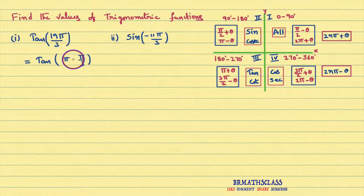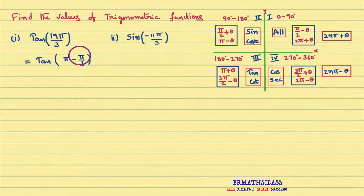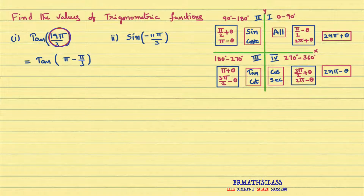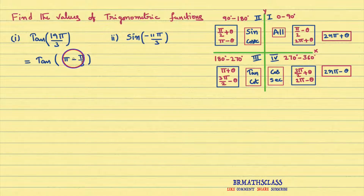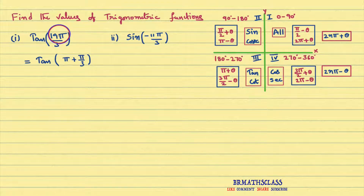Now you see here, you need to find the suitable symbol — either plus or minus. Suppose if I write minus here: 3π minus π, that is 2π by 3. But 2π by 3 is a very small number compared to 19π by 3. If I write plus here: 3π plus π is 4π by 3. That is also a smaller number compared to 19π by 3.